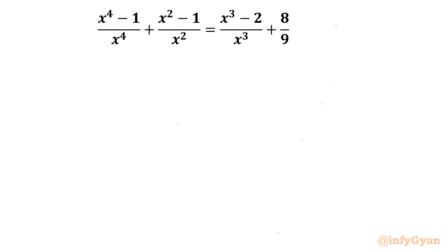Welcome to Infigyan friends. In this video we are going to take up one very interesting rational equation problem. The equation is x⁴ minus 1 over x⁴ plus x² minus 1 over x² equals x³ minus 2 over x³ plus 8 over 9. We have to find out real solutions, so x belongs to real numbers.